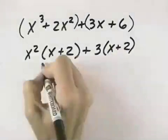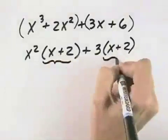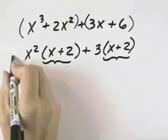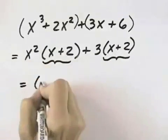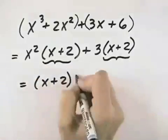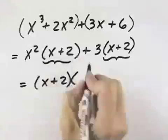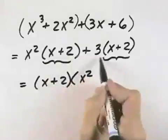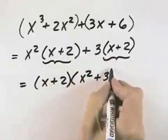Now I can immediately see grouping is going to work because I do have the common factor of x plus 2. So that means I can divide out the x plus 2 as the greatest common factor. When I do that, with this first term it leaves me the x squared, and with this second term it leaves me the plus 3.